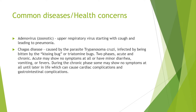Chagas disease is caused by the parasite Trypanosoma cruzi. They can get infected by being bitten by the kissing bug, also known as triatomine bugs. There are two phases — acute and chronic. In the acute phase, you may show no symptoms at all, or may have minor diarrhea, vomiting, or fevers. During the chronic phase, it may show no symptoms until later in life, which can end up causing cardiac and gastrointestinal complications.